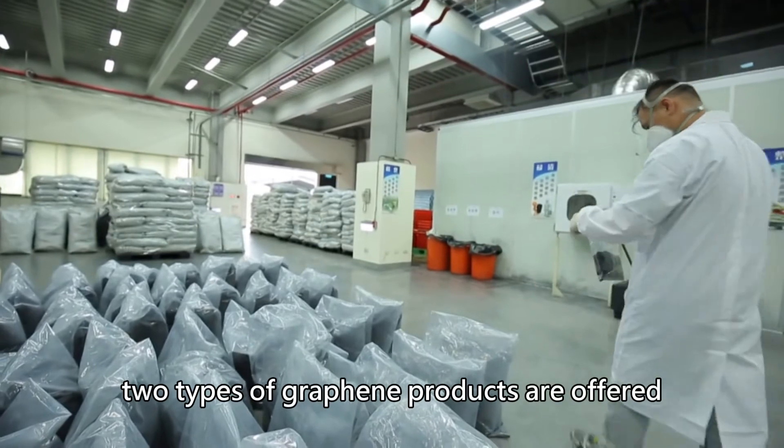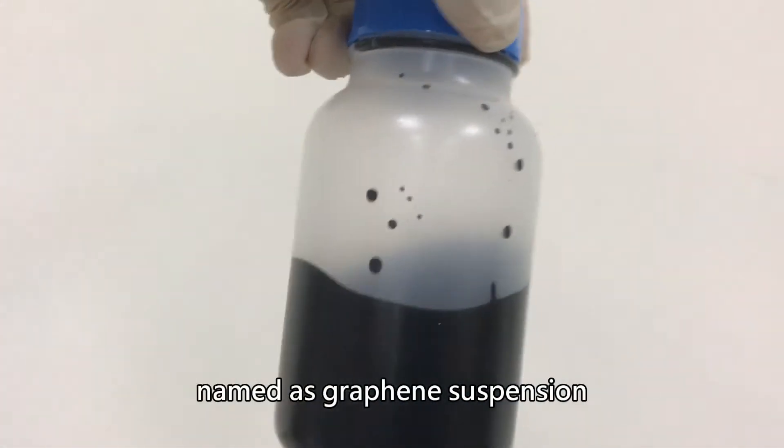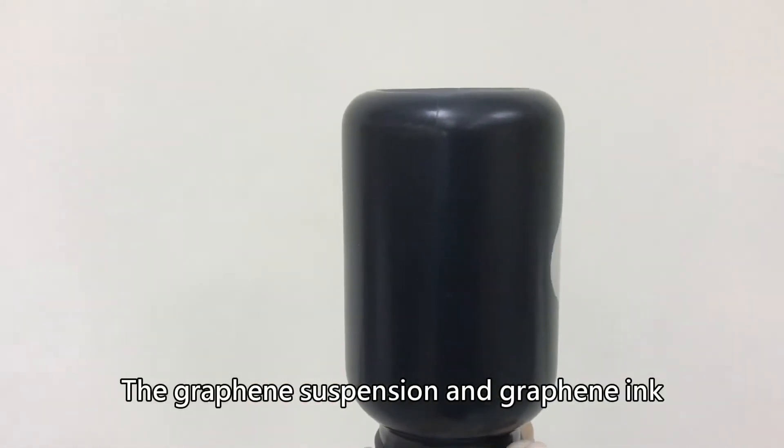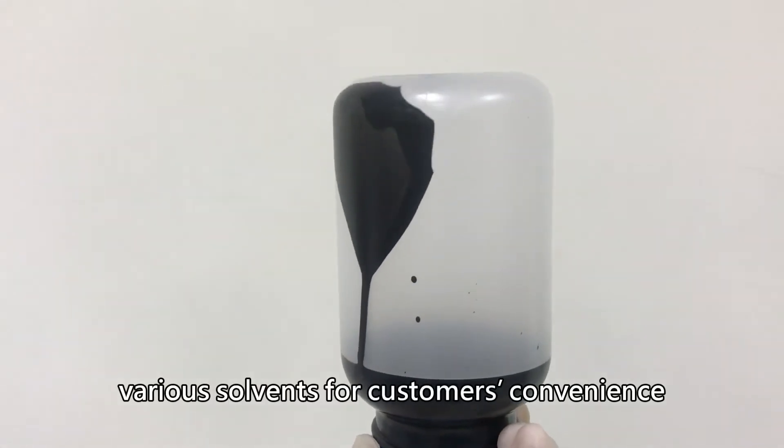Here, two types of graphene products are offered. One is in liquid form, named as graphene suspension and graphene ink. The graphene suspension and graphene ink are dispersing graphene powder into various solvents for customers convenience.